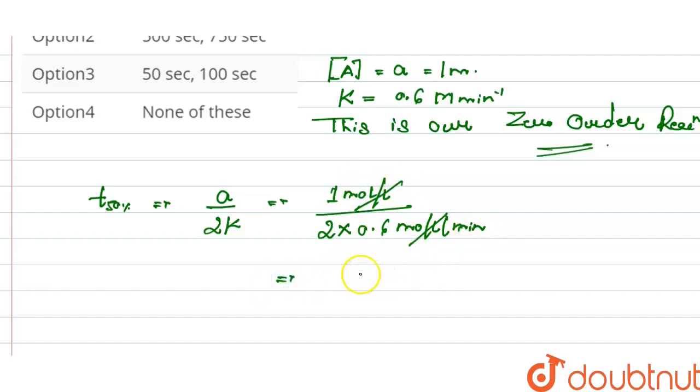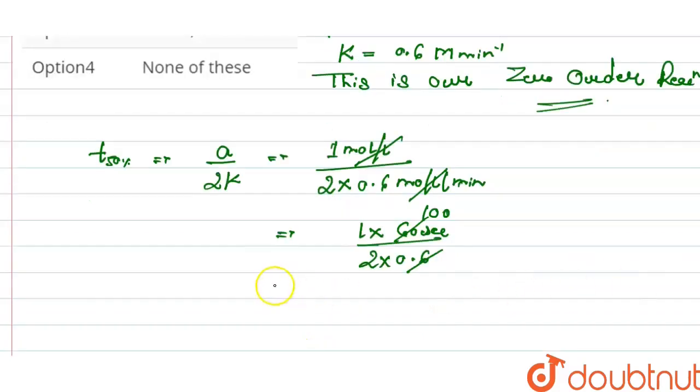It becomes 1 minute equals 60 seconds. So 60 seconds over 2 times 0.6, which is 60 over 1.2. That's 100 divided by 2, which equals 50. So our half-life is 50 seconds.